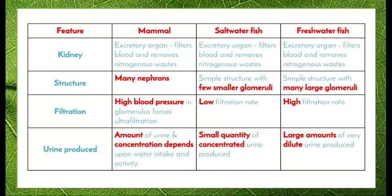This table summarises features of the excretory system in mammals, saltwater fish, and freshwater fish. In mammals, the kidney is an excretory organ that filters the blood and removes nitrogenous waste. They have many nephrons. Filtration occurs under high pressure — blood enters the glomerulus under high pressure, forcing ultrafiltration. The amount and concentration of urine depends on water intake and activity; if someone is dehydrated, the body produces less urine to conserve as much water as possible.